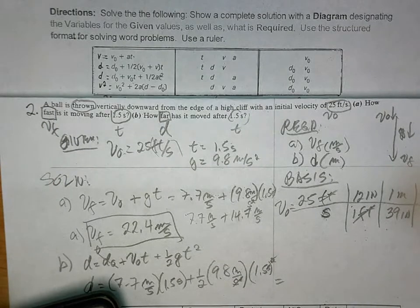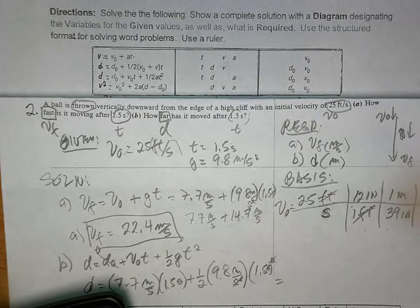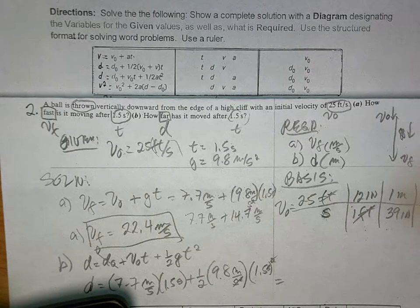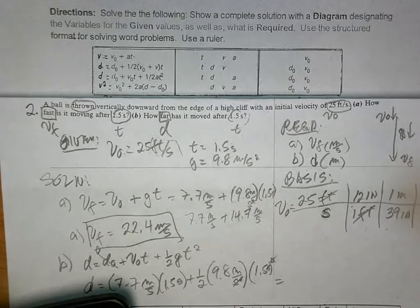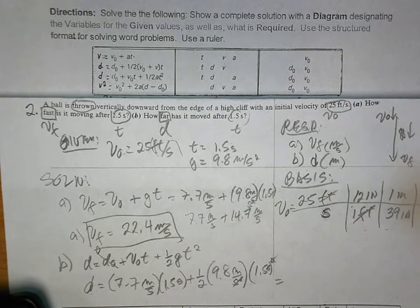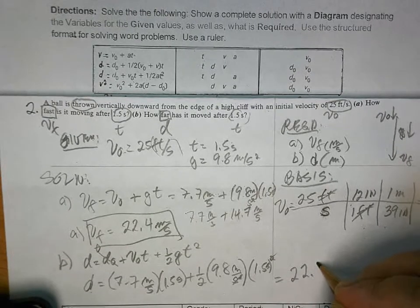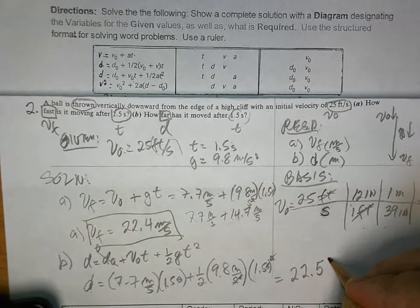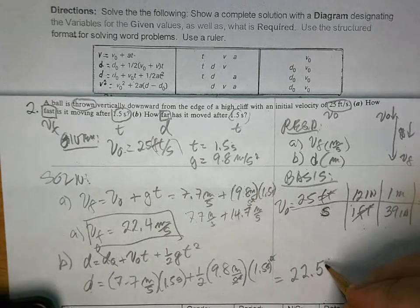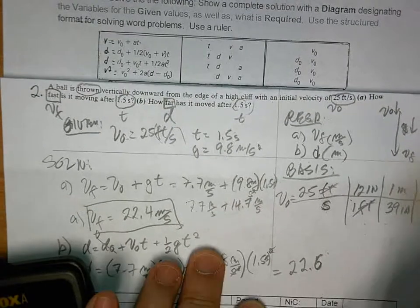This is all calculator work. So, 1.5 times 1.5 times, and then you divide it by 2 plus 7.7 times 1.5. So, we have 22.5, 22.6. Two significant figures, 23.